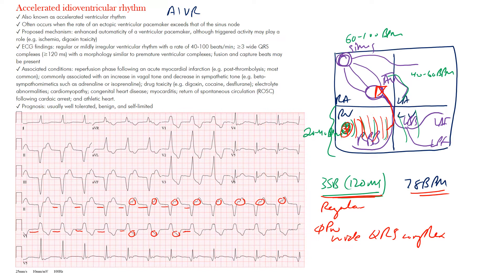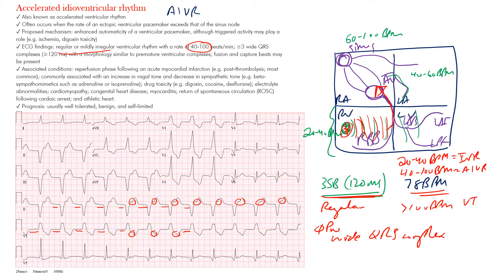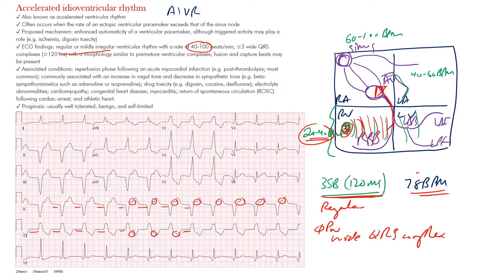The EKG findings include a regular or mildly irregular ventricular rhythm. A rate of 20–40 bpm is called idioventricular rhythm. A rate of 40–100 bpm is called accelerated idioventricular rhythm. Over 100 bpm with a wide complex is ventricular tachycardia. Since this rate is 78 bpm, it's below ventricular tachycardia but above the intrinsic idioventricular rate.